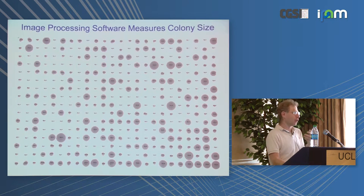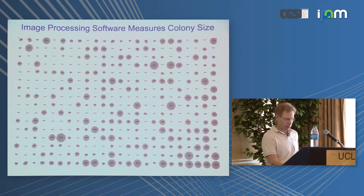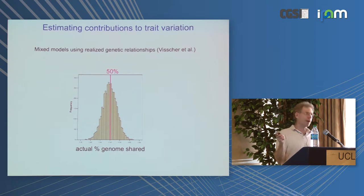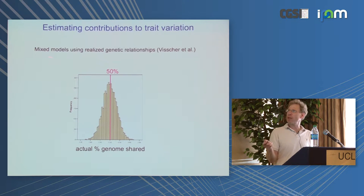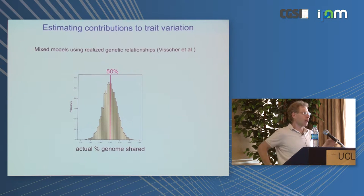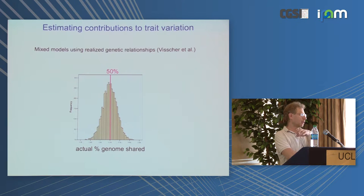Once you take these pictures, standard image processing software measures colony size over time to give a growth rate. Now you have a bunch of traits — growth rates in all these different conditions — and the genotype information for all the strains. The first thing you can do is estimate different contributions of genetic and non-genetic factors to trait variation. To do this, we employ the mixed model technology of realized genetic relationships, work that Eliezer has done a lot in, and which has been popularized in human genetics by Peter Visscher and colleagues.